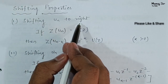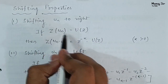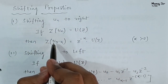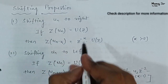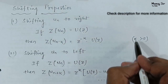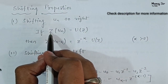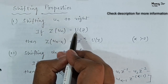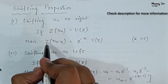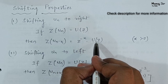First is shifting u(n) to the right. If Z transform of u(n) equals U(z), then shifting u(n) to the right means Z transform of u(n minus k) is equal to z to the power minus k into U(z), provided k is greater than 0.